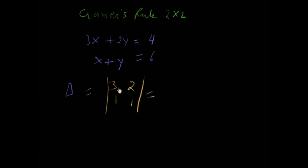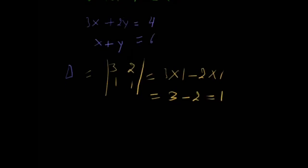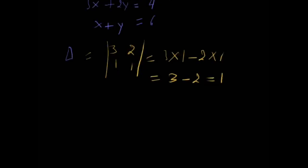Its determinant is 3×1 minus 2×1, which equals 3-2=1. Now we calculate delta one.